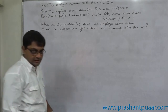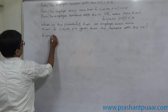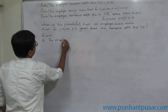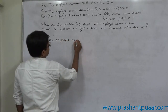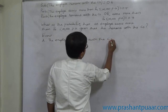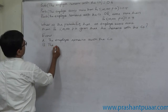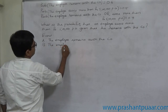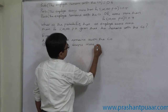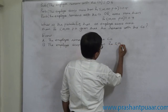First of all, let us use sign notation. Event A is: the employee remains with the company. Event B is: the employee earns more than Rs.5 lakh per annum.